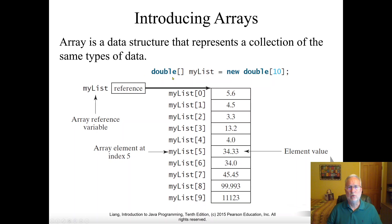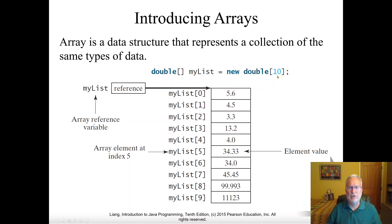Here's a double array. It could be int, it could be String, it could be Boolean, whatever. But double, open bracket, close bracket. My list is the variable name, then new, double, and 10. So there are 10 of them, going from 0 to 9. There is no 10. That's basic stuff you've got to understand and know.